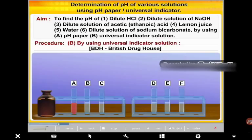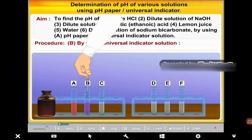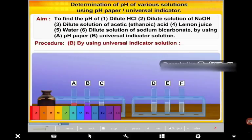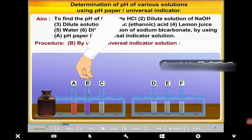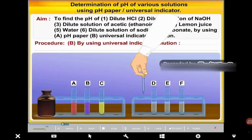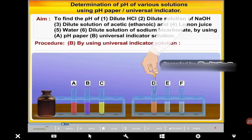Observe carefully the color of the solution in each test tube and match it with the different color shades given on the Universal Indicator bottle. Note the pH value given against the color which matches the developed color in the solution of each sample. Repeat the same procedure for all other samples and record their pH values in the observation table.